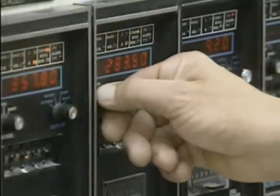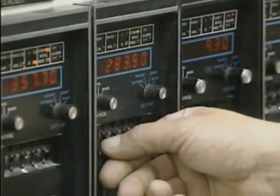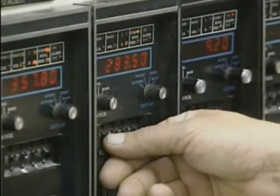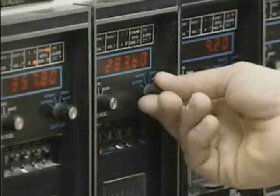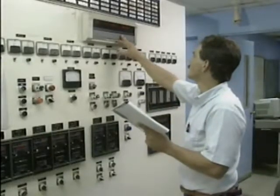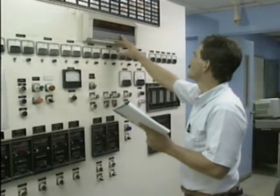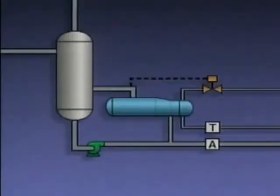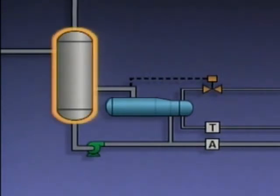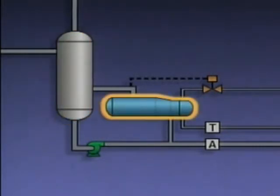Accurately interpreting control charts and responding properly to problems are keys to maintaining consistent product quality. We'll see how an operator responds to some problems that show up on control charts. We'll base our examples on a distillation system, represented by a simplified illustration.